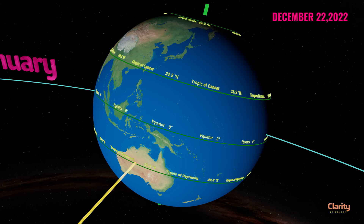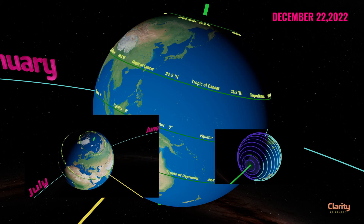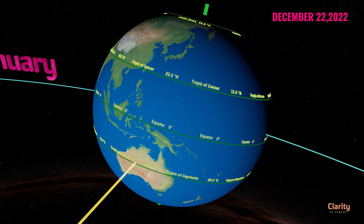When our summer solstice was happening on June 21st, it was their winter solstice. Likewise, when the entire arctic circle had 24 hours of daylight on June 21st, the entire Antarctic circle had night for all 24 hours. When sun starts setting for the next 6 months from the September 23rd equinox at the north pole, sun starts rising and is above the horizon at the south pole for the next 6 months. Basically, the events in the northern and southern hemisphere are similar but opposite.